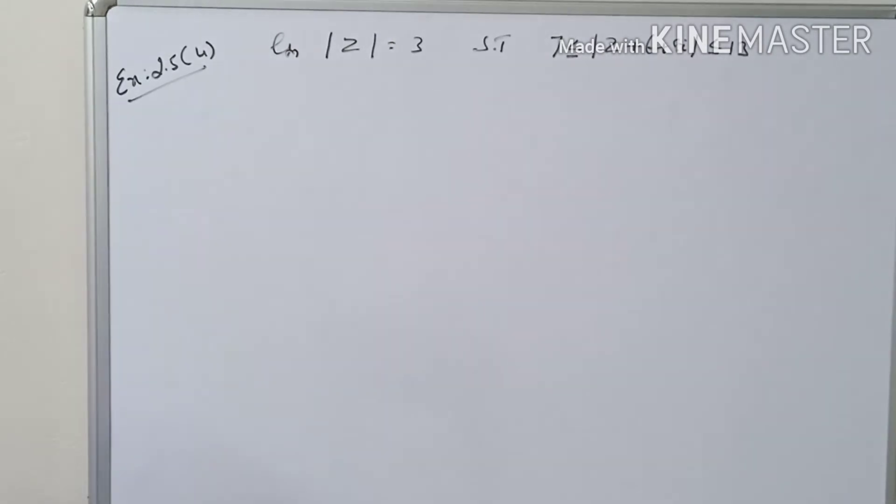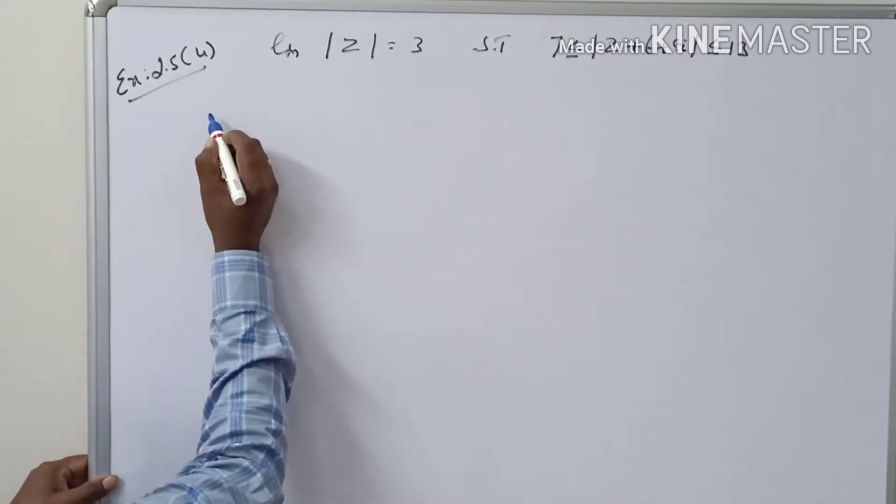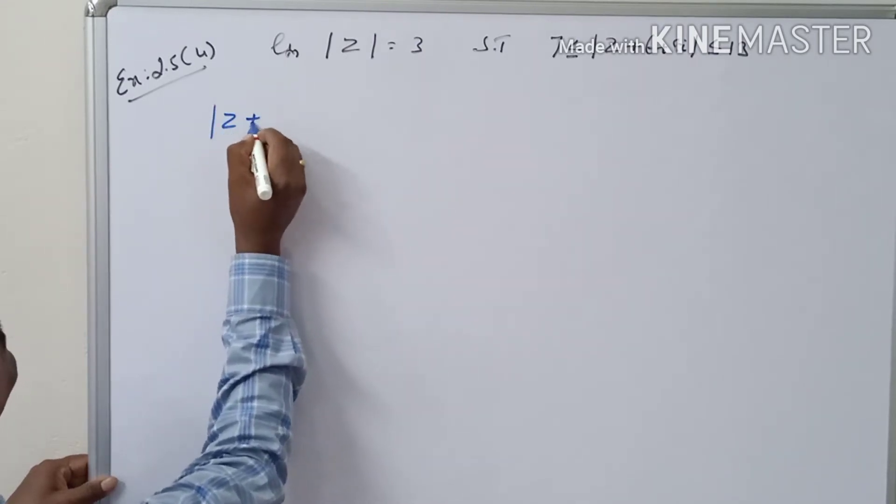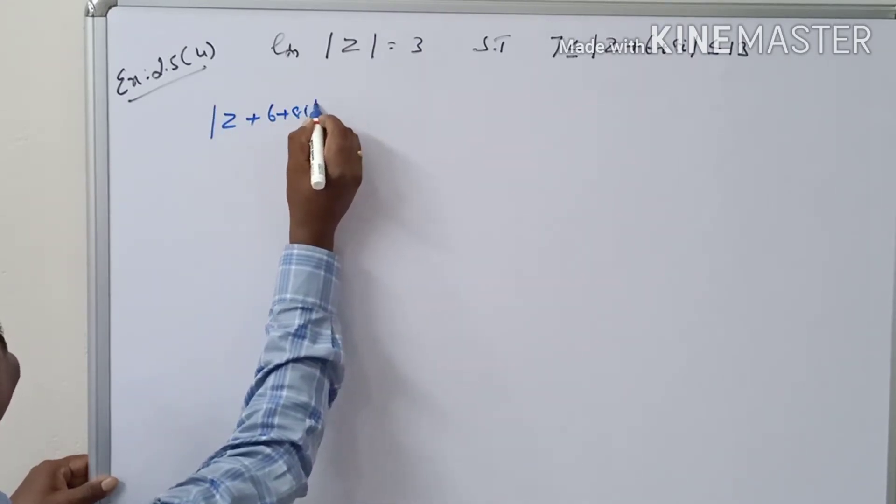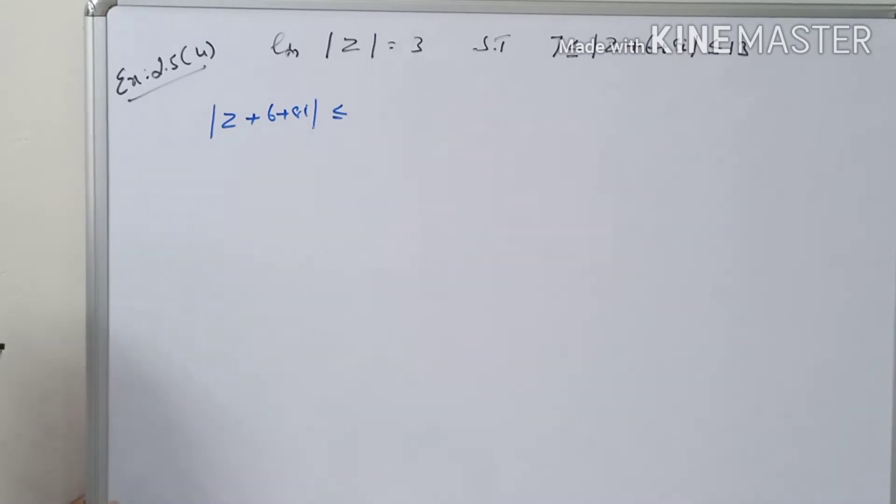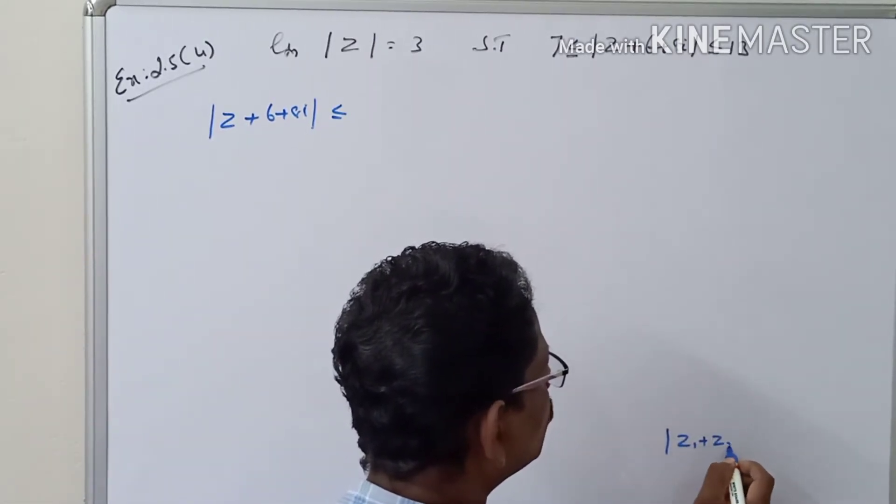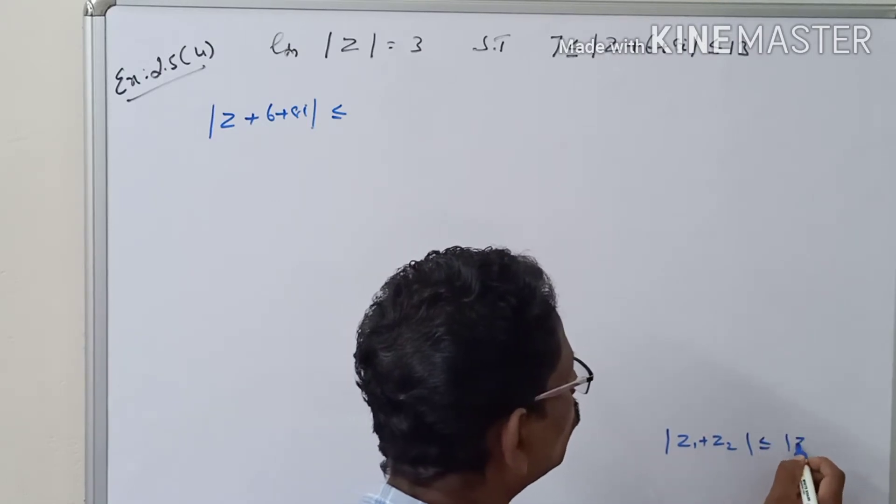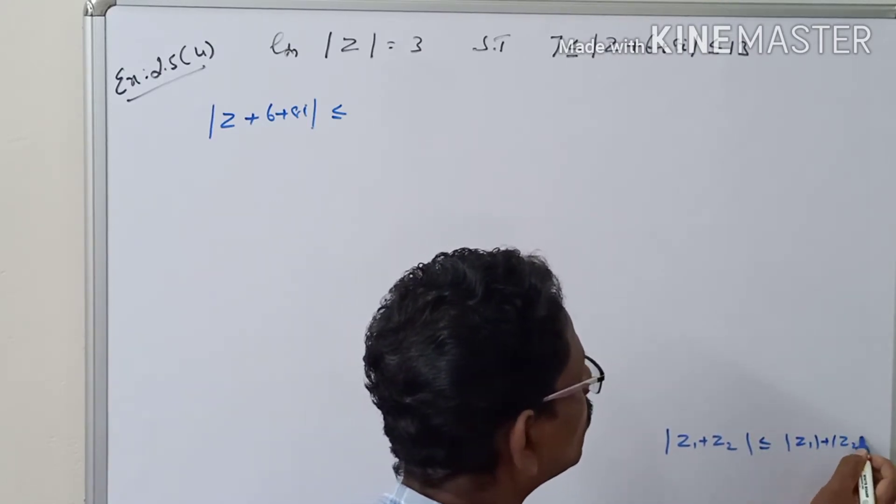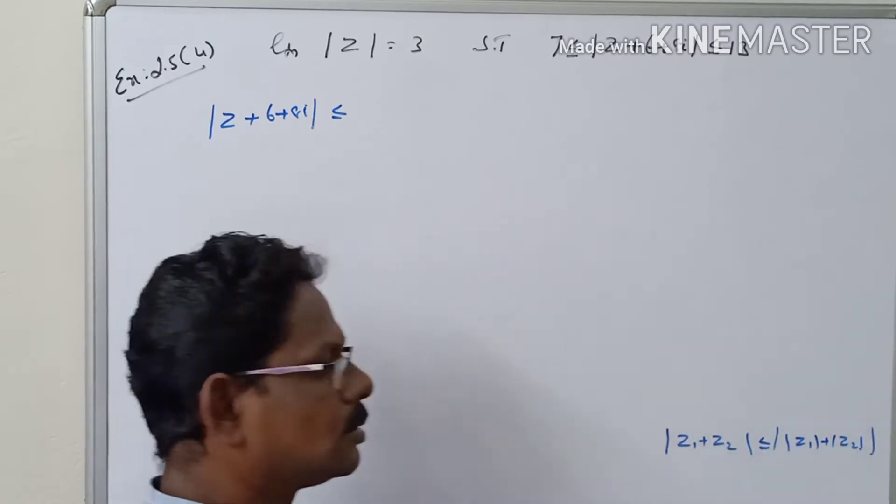So take |z + 6 + 8i| ≤... You know the formula |z1 + z2| ≤ |z1| + |z2|.